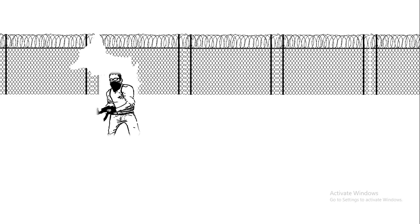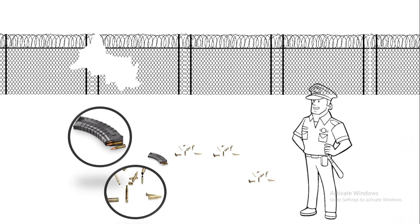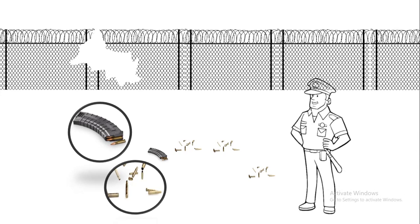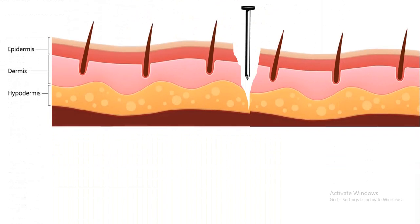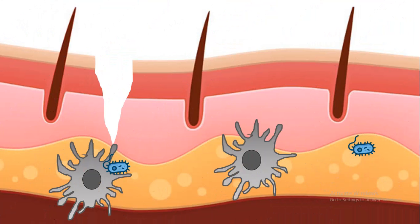Now let's say there is an invasion of a terrorist from the border who leaves trails such as empty magazines and bullet shells. Similarly, in our skin, let's say there is an invasion of a pathogen through a physical injury with a rusty nail. Some pathogens associated with that get inside our skin, and as a result our patrolling police of the immune system — the dendritic cells — would go and inspect and try to kill the pathogen.